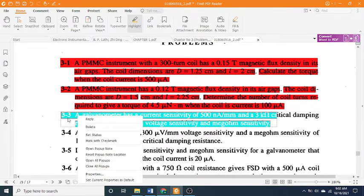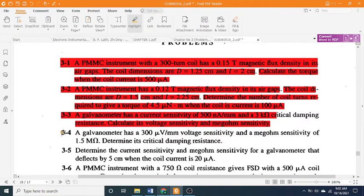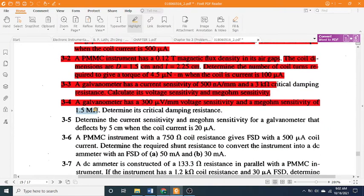3-4: A galvanometer has a 300 μV/mm voltage sensitivity and a megaohm sensitivity of 1.5 MΩ. Determine its critical damping resistance.